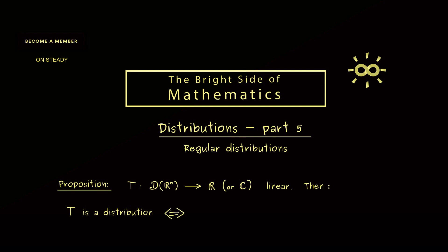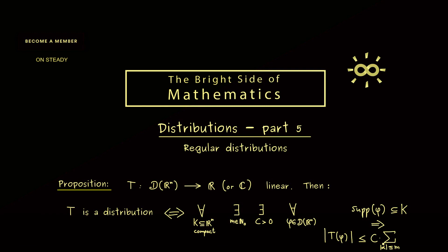Hence we can write it in the following way: T is a distribution if and only if for all compact sets K in R^n there exists a natural number m, which could be 0, and there exists a positive constant c, such that for all test functions phi, if the support of phi lies in the compact set K, then the value T of phi is bounded from above. Namely, we have the constant c times the sum over all multi-indices with degree less or equal than the constant m, and then we look at all the derivatives of phi in the supremum norm. Please note this means that whenever you can write down such an estimate, you immediately have the continuity and therefore you have a distribution T.